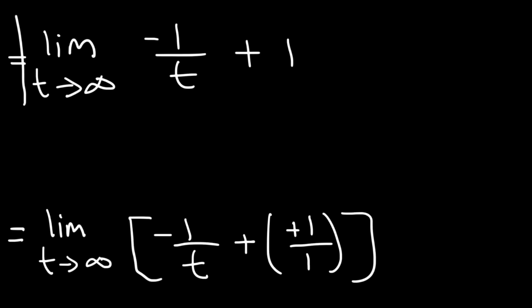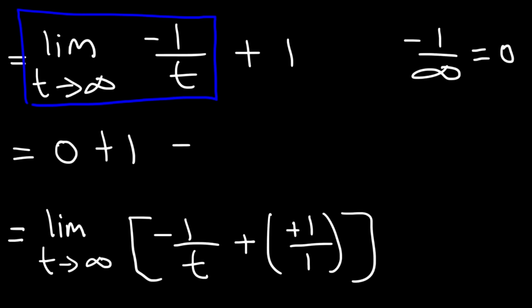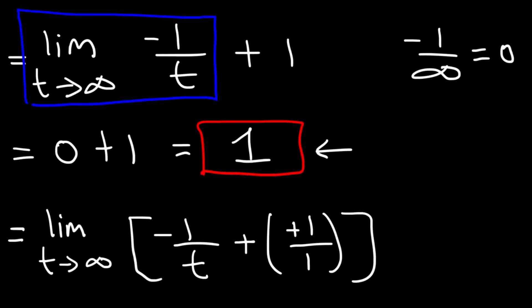Now let's apply this: the limit as t goes to infinity of negative 1 over t. If we have negative 1 over infinity, dividing by a very large number gives a very small number, so this approaches 0. So we have 0 plus 1, giving a final answer of positive 1. Because we have a finite number, we can say this integral converges.